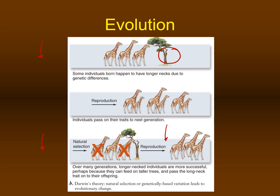Darwin's idea was different. He suggested there was phenotypical variability within the population of giraffes, and some could access food on top of trees much easier than others. Therefore, long-necked giraffes would have greater reproductive success. Long-necked animals would survive and leave more progeny, demonstrating the role of natural selection in evolution. Darwin didn't know about the genetic basis for variation, but the main concept he got absolutely correct.